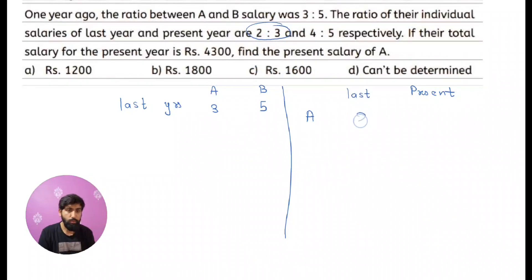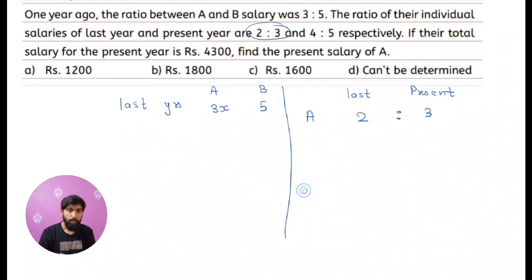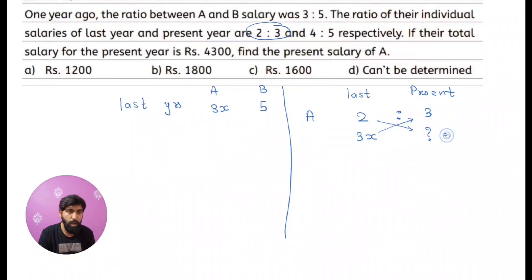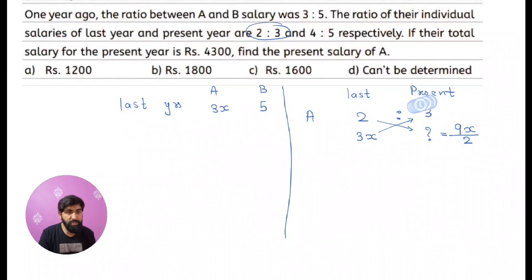The salary ratio for A from last year to present year is 2:3. Let us assume the last year salary of A is 3x. Since last year is 2 and present year is 3, I do cross multiplication: 3x × 3 = 9x, divided by 2. So the present year salary of A is 9x/2.